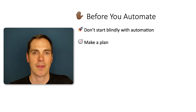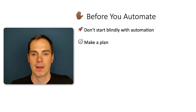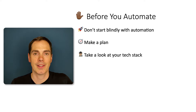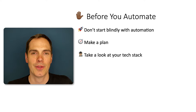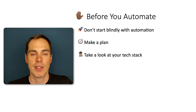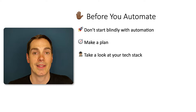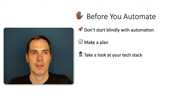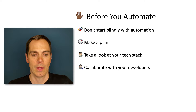Sit down together with your team and outline the architecture — what you want to automate, with which tool, and on which level. You cannot use one tool to automate everything; there's always a combination of tools. Before you start searching, take a look at your tech stack: what tools and technologies does your development team use? Write that down and use it when evaluating whether tools support those technologies.